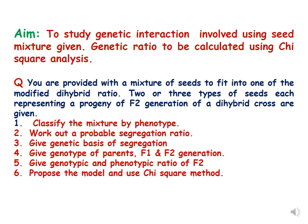Two or three types of seeds, each representing a progeny of F2 generation of a di-hybrid cross, are given. The questions are: (1) classify the mixture by phenotype, (2) work out a probable segregation ratio, (3) give genetic basis of segregation, (4) find genotypes of parents, F1 and F2 generation, (5) find genotypic and phenotypic ratio of F2 generation, and (6) propose the model and use chi-square method.